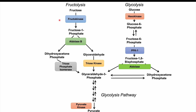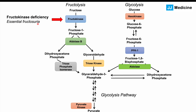The two devoted enzymes in the fructolysis pathway are fructokinase and aldolase B. If there are issues with these enzymes, there can be problems with the fructolysis pathway. A deficiency of fructokinase leads to the condition known as essential fructosuria. A deficiency of aldolase B — if we cannot produce it or there's an issue with its functionality — leads to hereditary fructose intolerance.